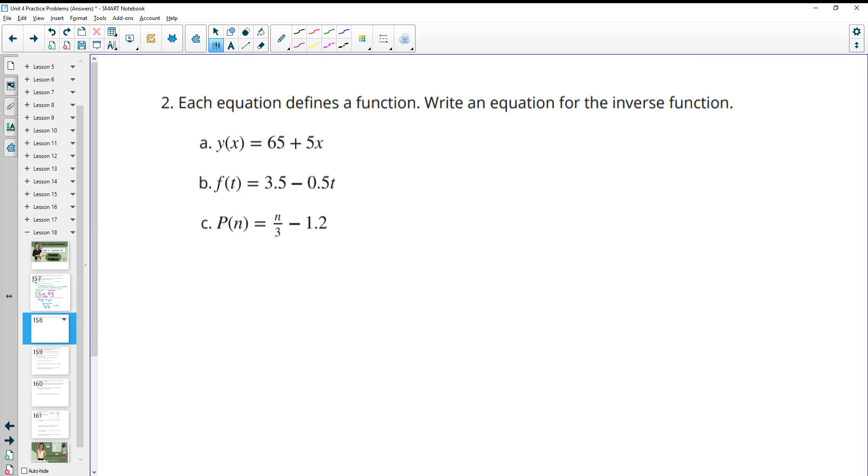Number two, each equation defines a function. Write the equation for the inverse. So remember, inverse is you do order of operations backwards so you can undo these things. If we think about what we first do to the X, we multiply by 5, then we add 65. So we're going to subtract 65 first to undo that. So we're going to take Y of X and we're going to subtract 65. Then we would need to divide by the 5. That's going to get us back to X.